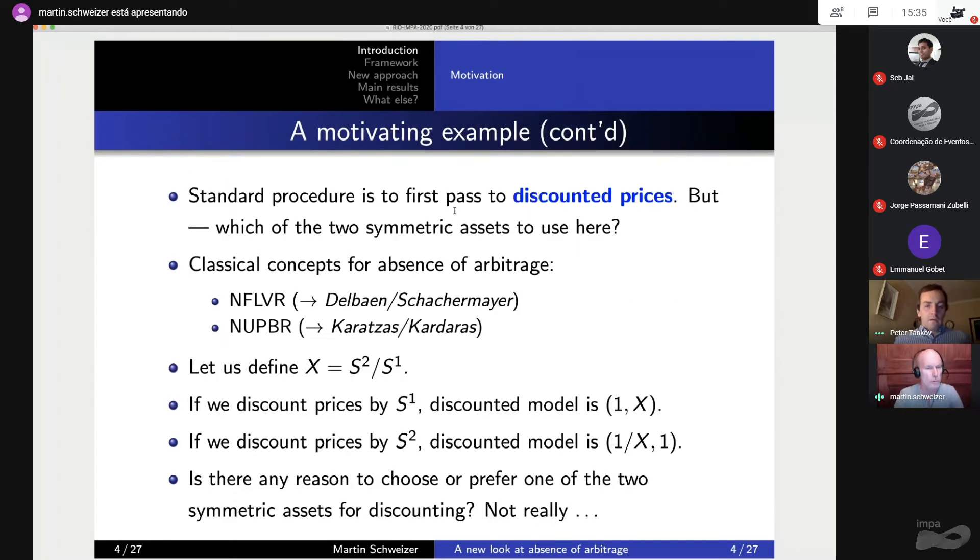And when you look at the classical theory, then you will not find a direct answer to this question. Why? Well, typically, what you do is, first, you always look at discounted prices. So then you have your discounted prices and one asset with a constant price of one, which is the one which you've used for discounting. But now you have two completely symmetric assets. So which one do you use to discount? And then which concept for absence of arbitrage do you want to use? And I mean, you all know no free lunch with vanishing risk. This is from Delbaen and Schachermayer. You all know no unbounded profit with bounded risk. This goes back to Karatzas and Kardaras.